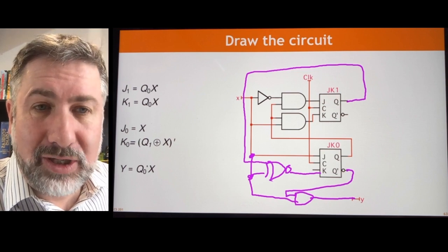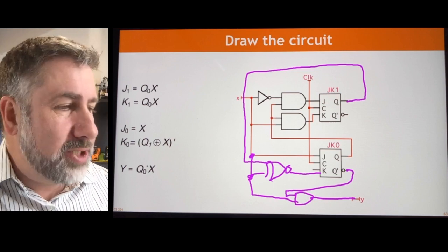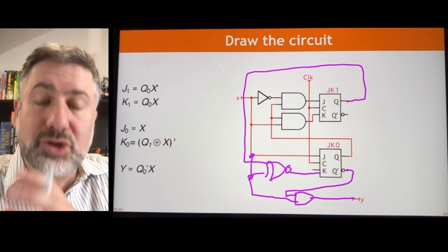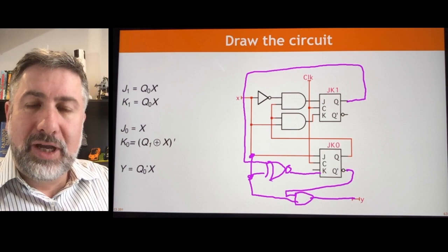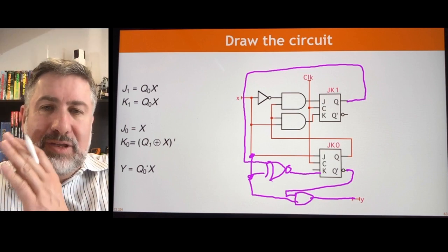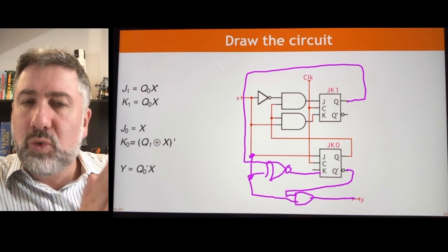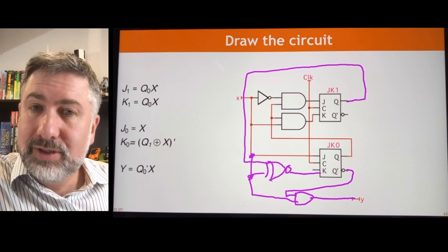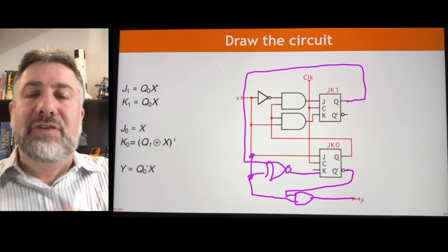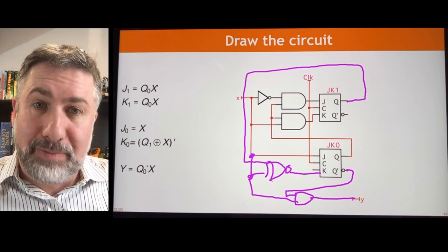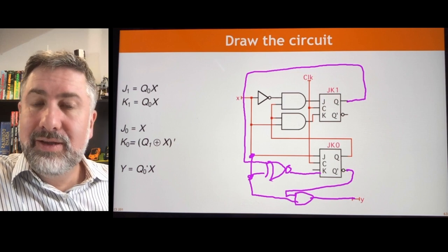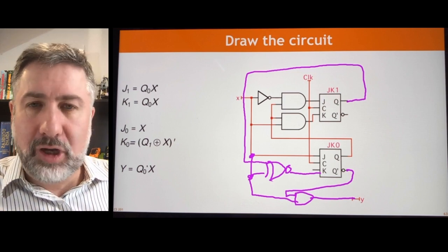That's the final result. The entire process from start to finish is: start with the problem description, build a characteristic table that says given the current state and inputs, what is the next state and outputs? Convert that to an excitation table that says given the state transitions you want, what inputs do you have to provide? Then build the logic for those inputs.